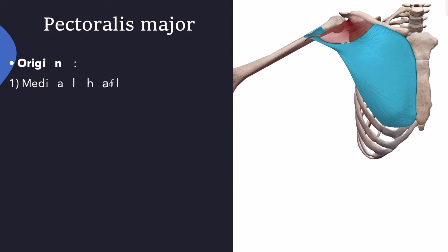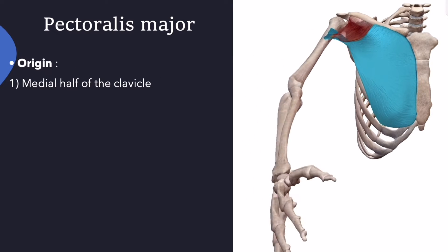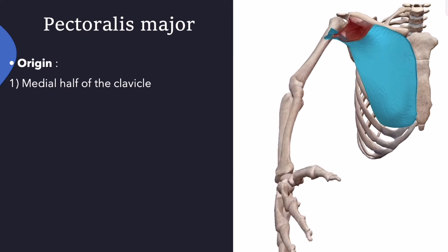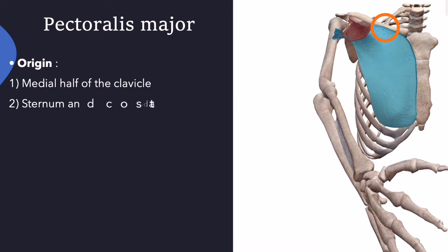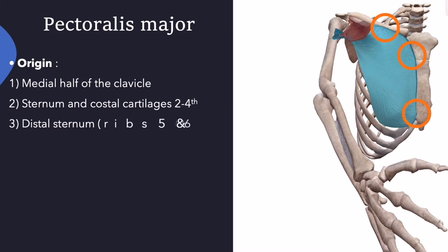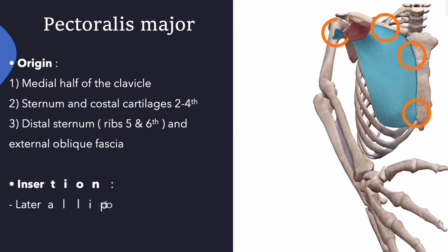Pectoralis major is a paired superficial muscle located on the anterior surface of the thoracic cage. Origin and insertion were written at the list.